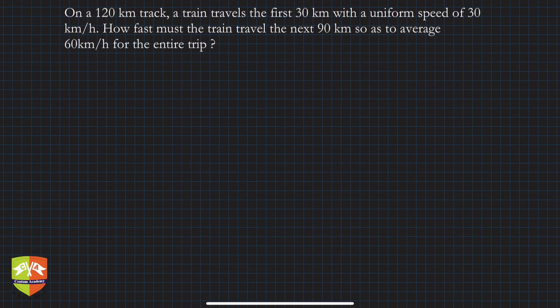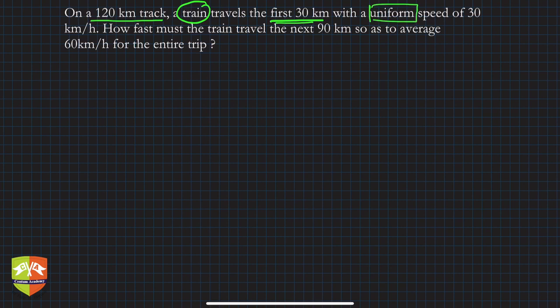Welcome, my dear friends. We are going to take up another problem on motion and try to solve it with whatever learning we have. Let's first read out the question thoroughly. On a 120-kilometer track, a train travels the first 30 kilometers with a uniform speed of 30 kilometers per hour. How fast must the train travel the next 90 kilometers so as to average 60 kilometers per hour for the entire trip?